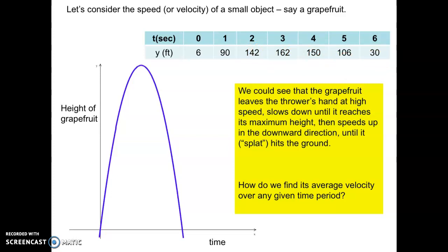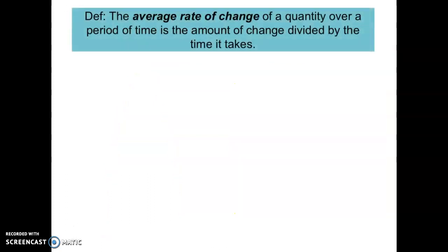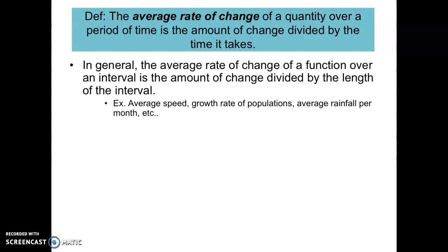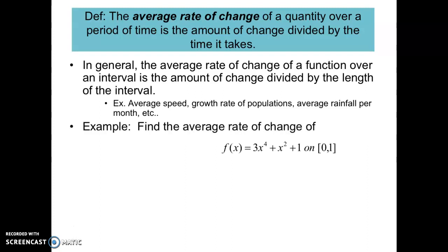It reaches its maximum height and then speeds up in the downward direction until it goes splat. So how do we find its average velocity over a given time interval? The average velocity — from our earlier math courses — is the change in the position of an object over the change in time. The average rate of change is the change in output over the change in input, which we often call the slope. In general, the average rate of change of a function over an interval is the amount of change divided by the length of the interval — for example, average speed or growth of populations.